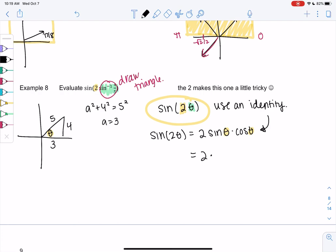So sine of theta will be opposite over hypotenuse, so 4 fifths, which is why sine inverse of 4 fifths was that way. And then cosine will be adjacent over hypotenuse, 3 fifths. And then we'll just simplify, and that is the value of this weird function. So what do we get? 2 times 4 times 3, 24 over 25. So just be super cautious when there's coefficients. They seem like minor details, but they make a big difference. Alright, and that's it for 4 8.